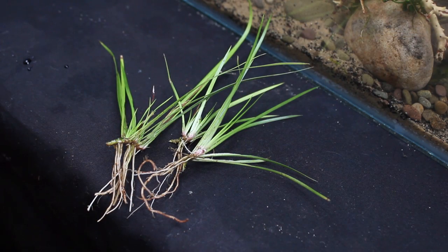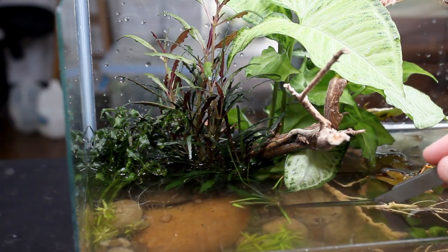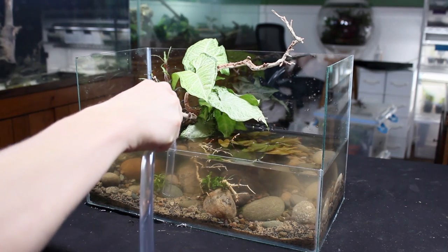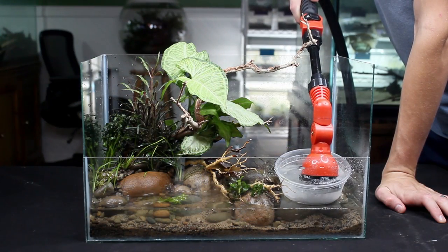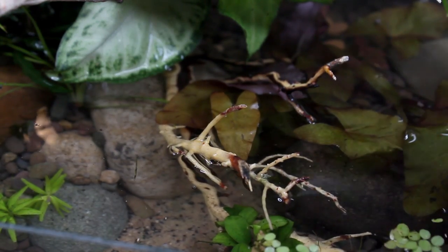Lastly I added a few segments of Echinodorus grisebachii Minimus Aureus to the riparium area. Wow that's quite a mouthful. Everything looked good so I drained the tank down and filled it back up with some clean water. I also pulled some Salvinia from one of my other ripariums to top off the water area.